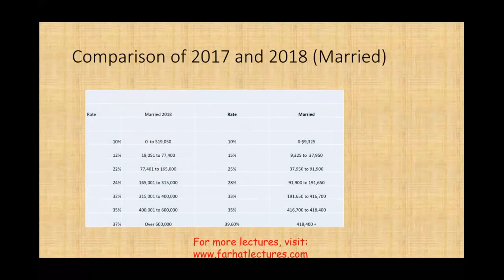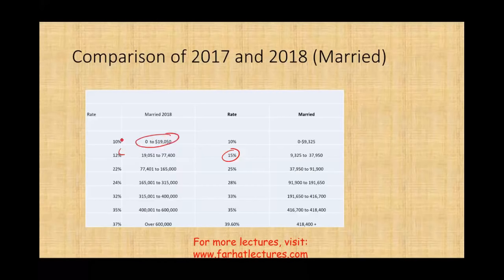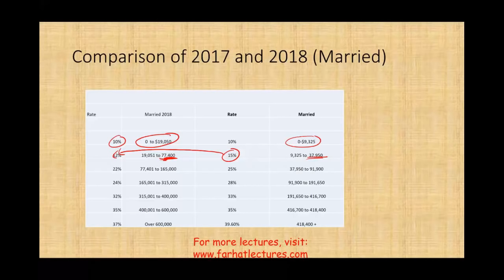We go from 25% down to 22% for 2018 — again a lower tax bracket, though it ends a little earlier. And 28% becomes 24%. Overall there's a shifting of income being taxed at a lower level, which is good. For married filing jointly, 15% also drops to 12%, and the bracket now extends up to $77,000 instead of $37,000.